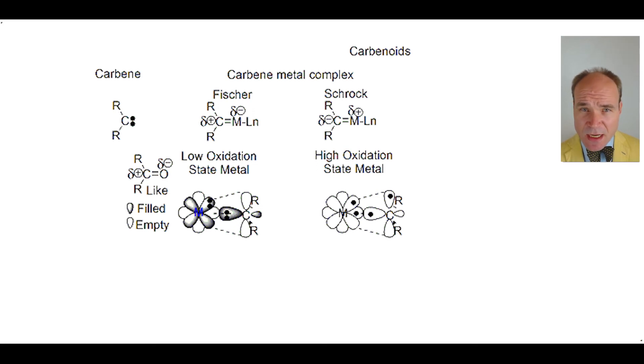An example of a carbenoid is a Simmons-Smith reaction. The carbenoid is like the prior carbene metal complexes except the carbon is singly bonded to the zinc metal. A carbenoid reacts with an alkene to give a transition state where the carbon is in the center of a butterfly-type transition state.